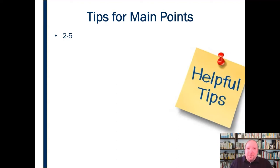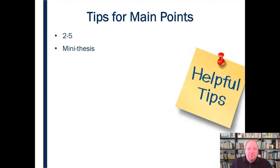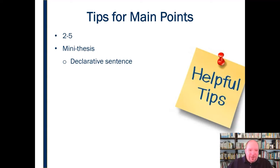So we're thinking about having somewhere in the two-to-five range of main points. Each main point ought to really be its own mini thesis. We're developing our main points around an overall central idea or thesis statement, but each main point ought to be its own little mini thesis statement in and of itself. It should be a declarative sentence — not a question and not exclamatory — you're telling the audience what the main point is.